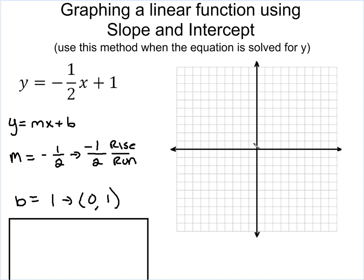So again, I'm going to put my point at my y-intercept, which is 0, 1. However, this time, instead of going up 2 and over 1 like I did in my last problem, I'm going to go down 1, because that's my rise, and then over 2. Down 1 and over 2.